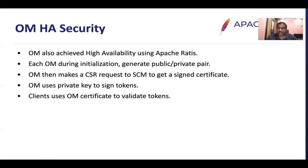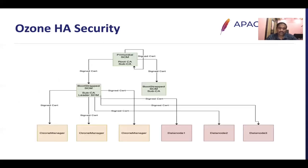OM-HA security: OM also achieves high availability using Apache Ratis. Each OM during initialization generates a public-private key pair and makes a CSR request to SCM to get a signed certificate. OM uses the private key to sign tokens; clients use the OM certificate's public key to validate tokens. In the Ozone HA security architecture, one node is chosen as the primordial SCM, generates a self-signed certificate, and acts as root CA. That root CA issues signed certificates to itself and other SCMs. The leader SCM, using its sub-CA, issues signed certificates to Ozone Managers and Data Nodes via Kerberos-authenticated CSR requests.